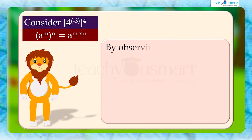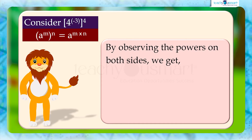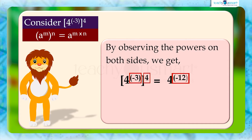By observing the powers on both sides, we get minus 3 multiplied by 4 is equal to minus 12.